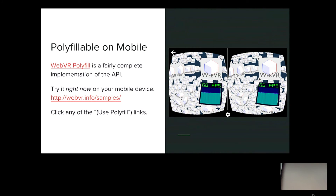One of the great things about this new API is that it's actually quite easy to polyfill on mobile. We've got a fairly complete WebVR polyfill initially put together by my co-worker Boris Smoos. You can see it in action on your phone right now by going to webvr.info/samples and clicking on any of the links that say 'use polyfill.' It's not a spectacular WebVR experience, but a very acceptable baseline that works on any phone — Android or iOS — and allows you to do things like basic panorama viewing, movies, or simple scenes. It's not the same caliber as high-end desktop VR, but the fact that it runs on iOS is great.